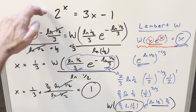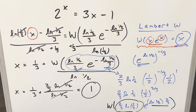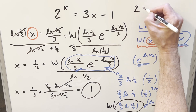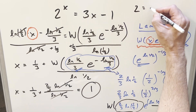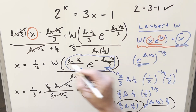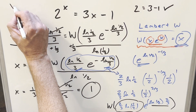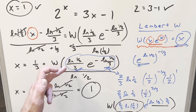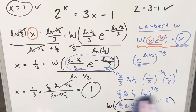One-third plus two-thirds gives us a solution of just 1. Coming back to our original problem, let's verify: plug in x = 1, and we get 2 on the left side. On the right, 3·1 − 1 = 2. That works. So x = 1. But is this going to be the only solution? If you remember the graph, there have to be two solutions because there are two branches of the Lambert W function.